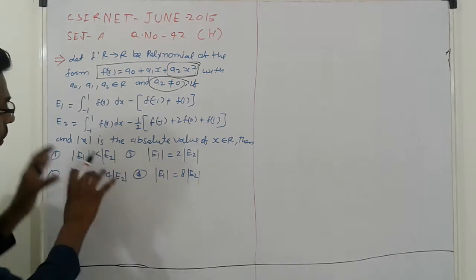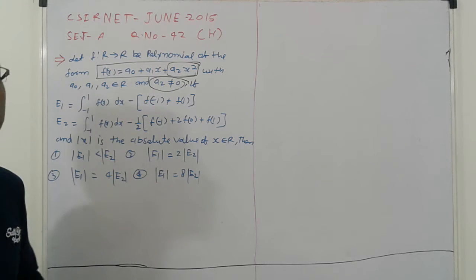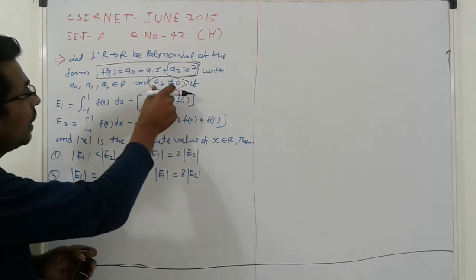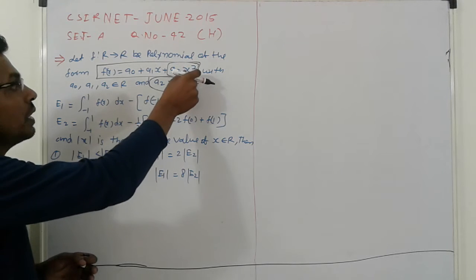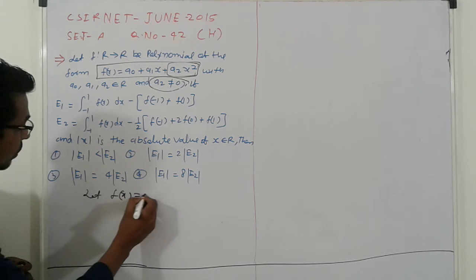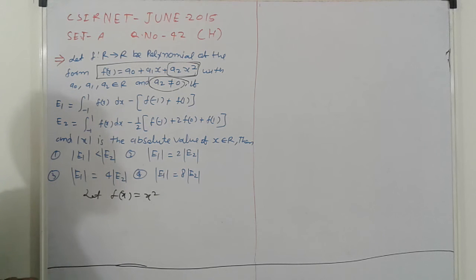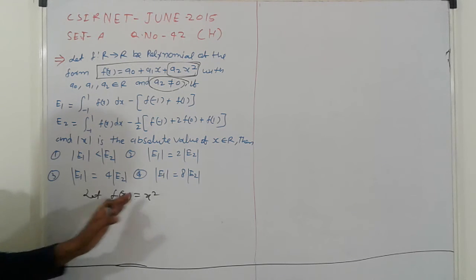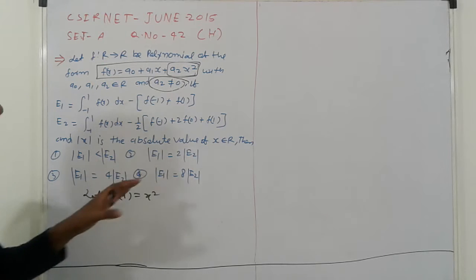For total calculation, find out E1 and E2. Because a2 is not 0, it means it is quadratic. So suppose let f(x) equal x squared and find out this calculation.